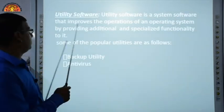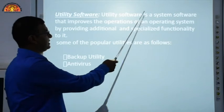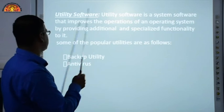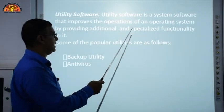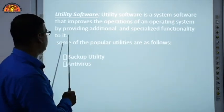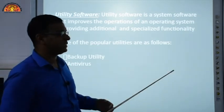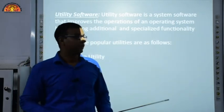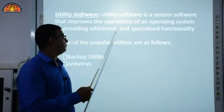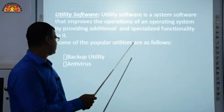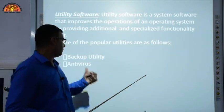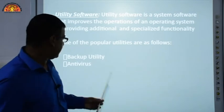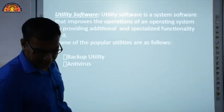Utility software is a type of system software that improves the operation of an operating system by providing additional and specialized functionality. It helps update the operating system. Some popular utilities include backup utilities and antivirus software — antivirus protects against bad programs (viruses).